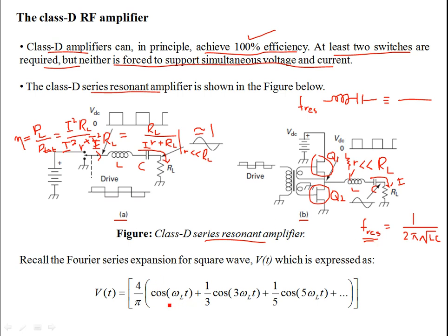The resonance frequency we wish to allow through is ω_L. The drive signal is a square wave. We have a single pole double throw (SPDT) switch that alternately commutates between the VDC node and ground, producing pulses — VDC for half the time period when the switch is at that node, and zero otherwise. The driver switch is controlled by a square wave.